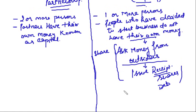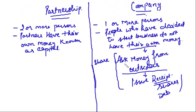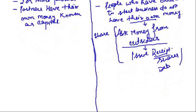So in company, the people who have decided to start the business do not have their own money. They ask money from outsiders and issue them a receipt — that receipt is known as the issue of shares. Now, if we are taking outsiders' money just in the form of a loan, who are the owners of the company — the people who decided to start the business, or the people who are investing and giving the money?